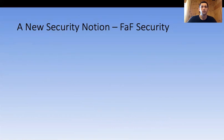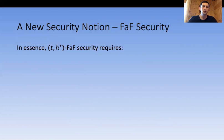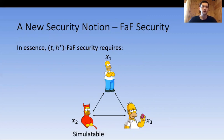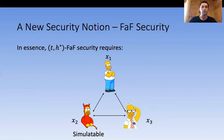This leads me to our new security notion, which we call security with friends and foes, or FaF security for short. Roughly, FaF security requires: for any adversary corrupting at most T parties maliciously — in this example just one — we want to simulate its view, just like in the standard definition. Additionally, we require that any semi-honest adversary corrupting at most H* parties can also have its view simulated, even if the adversary sent non-prescribed messages to the semi-honest party.